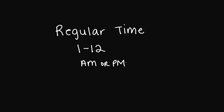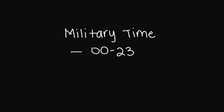When it comes to regular time, we use numbers 1 through 12 and we use a.m. or p.m. to represent the hour in a 24-hour period. Military time uses the numbers 0 to 23 to represent the hour in a 24-hour period. The 0 here represents 12 for 12 a.m., and then your 23 here represents 11 for 11 p.m.